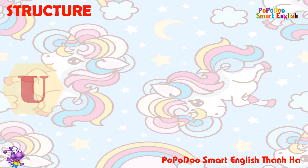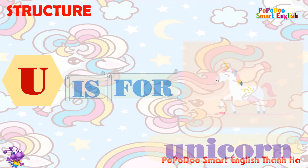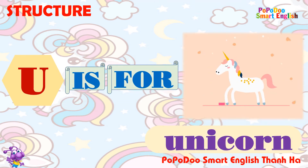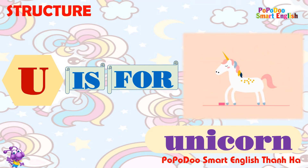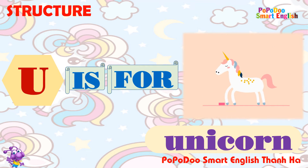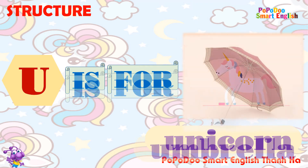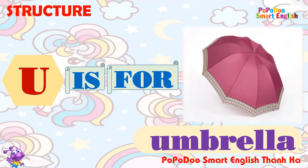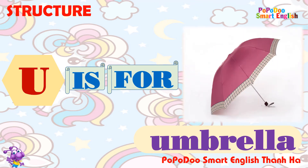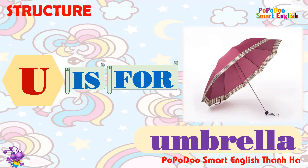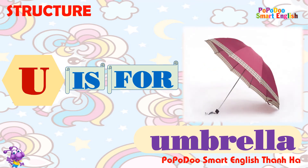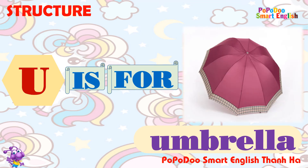Letter U. U is for unicorn. U is for unicorn. Letter U. U is for umbrella. U is for umbrella.